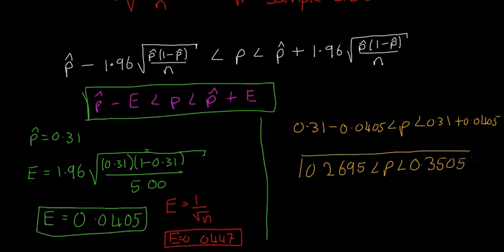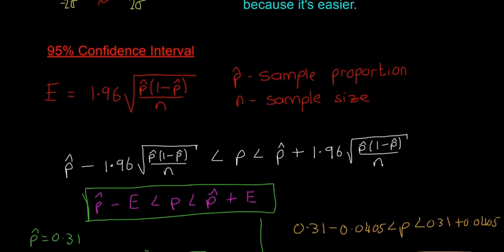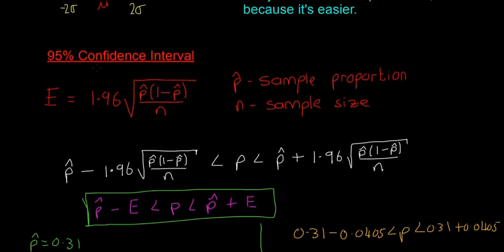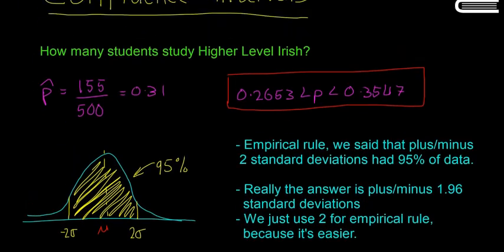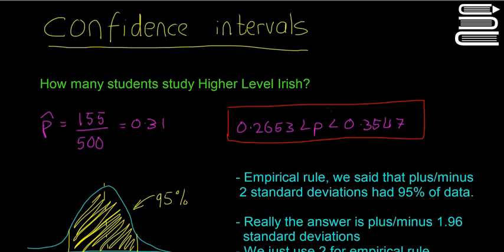So we're 95% confident that between 27%, 26.9% and 35% of people study higher level Irish. So that's how to use confidence intervals and specifically the 95% confidence interval example, which is what they ask most of the time on the exam. And then after that, you're just talking about more and more examples using basically the same method.